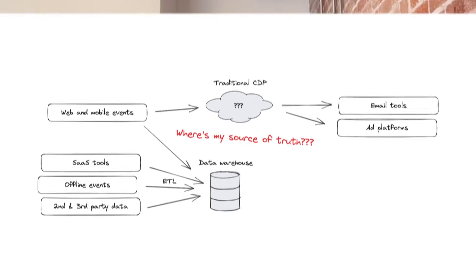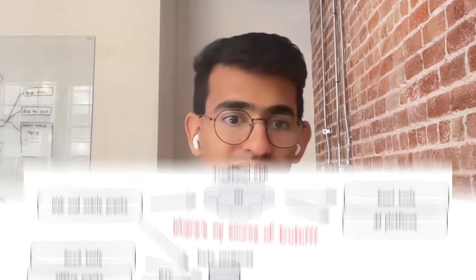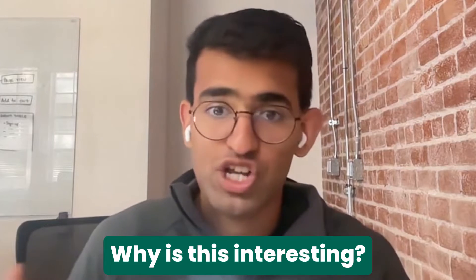The whole premise of a composable CDP is very simple. It basically says that for companies investing in a data warehouse or planning to make a shift towards a data warehouse being the center of gravity for data in their organization, there's maybe no point of buying a separate CDP that's going to be a separate data store. Instead, the idea of a composable CDP is to bring CDP functionality directly to your data warehouse, rather than going into a third-party system like Segment, Salesforce CDP, or Adobe CDP.